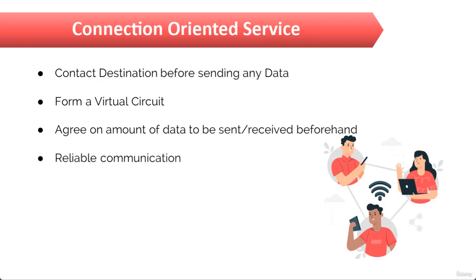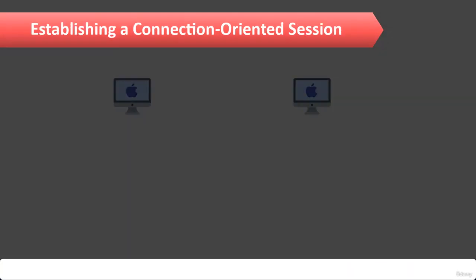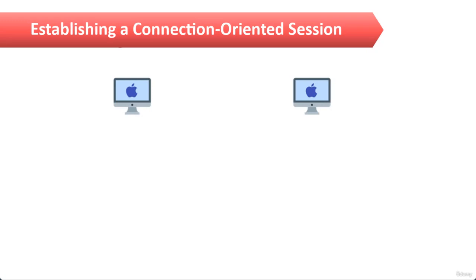This type of communication — connection-oriented service — is always reliable communication, because for sending the data a fixed path is present, and it guarantees that the packets will be delivered at the destination. Now you have two computers on your screen which depict a typical reliable session taking place between sending and receiving systems.